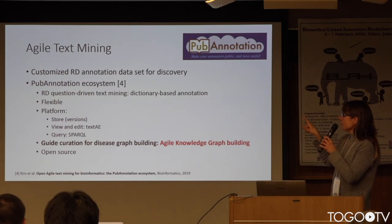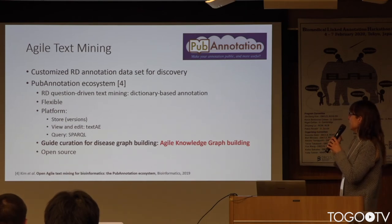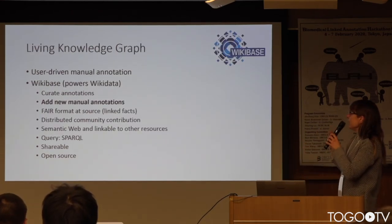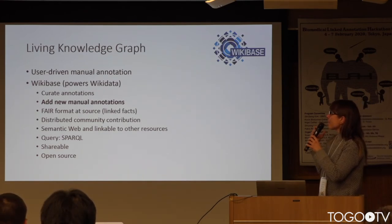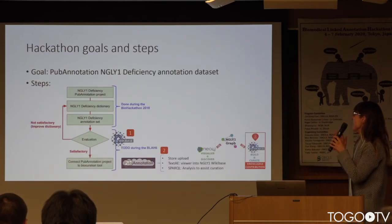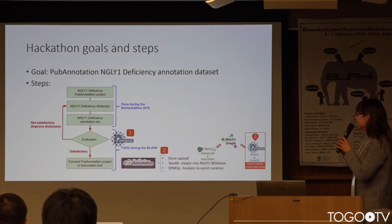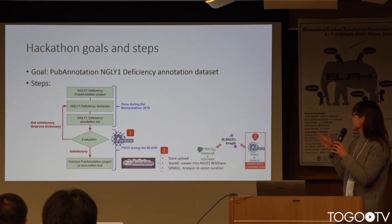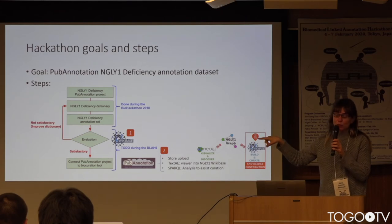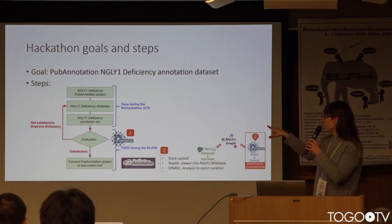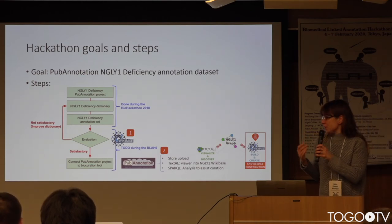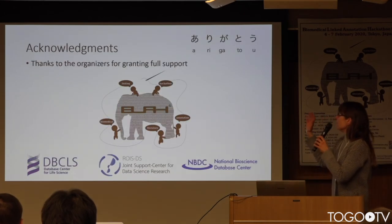PaPa annotation is useful for building customized annotation datasets and can be used to guide curation for disease graph building. We also propose using Wikibase, which helps build living knowledge graphs by allowing new manual annotations, among other things. The goal of our proposal is to build a PaPa annotation NG1 deficiency-oriented dataset with different steps, with possible connections to the project using Wikibase as the evaluation tool for the annotation dataset, or using PaPa annotation to guide graph building through curation in an efficient way. Thank you to the organizers for allowing me to be here.